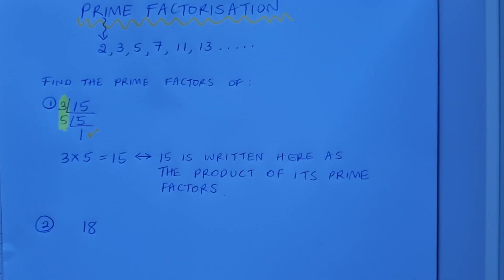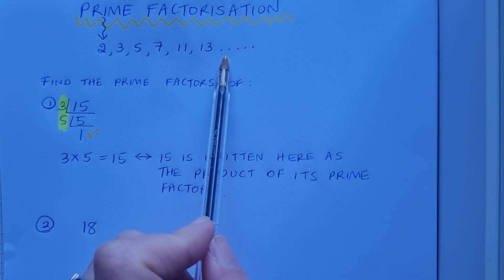Let's try a second one. This time I've got the number 18 and I want to find its prime factors. I'll go back up to my list of prime numbers and say, what can I divide into 18?